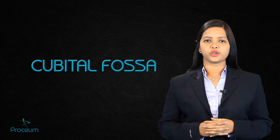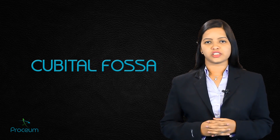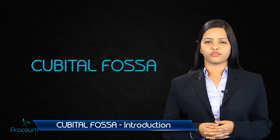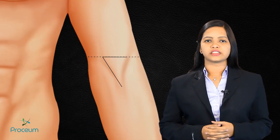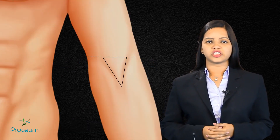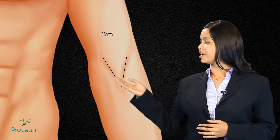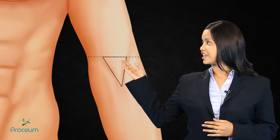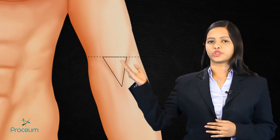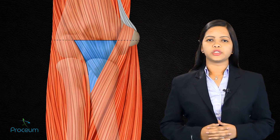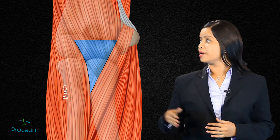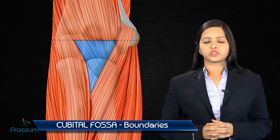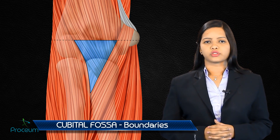Today the topic of discussion is cubital fossa and its clinical relevance. The cubital fossa is an important transition between the arm and the forearm. It is a triangular depression located anteriorly to the elbow joint, and it is formed between two forearm muscles, namely brachioradialis and pronator teres.